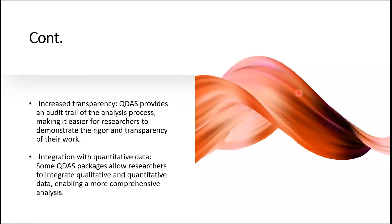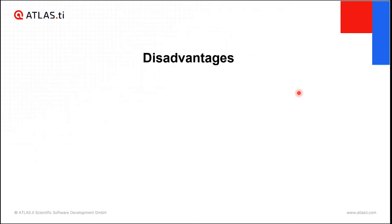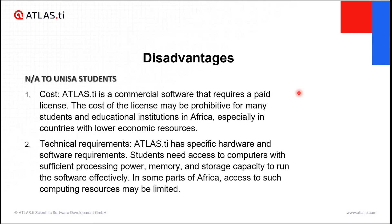There are always advantages and disadvantages. As university students at UNISA, most of the disadvantages don't apply to you. The first one is cost — these softwares are very expensive and Atlas TI is a commercial software. However, at UNISA we have paid the license, and as a registered student or staff member you will have a full package, so cost is eliminated.